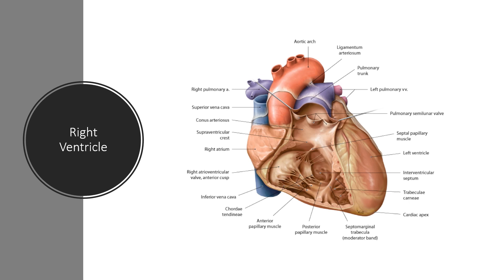The right ventricle receives deoxygenated blood from the right atrium via the tricuspid valve. Blood leaves the ventricle by passing through the pulmonary valve, leading to the right and left pulmonary arteries via the pulmonary trunk. The tricuspid, or right atrioventricular, valve is connected to three papillary muscles via chordae tendineae, which prevent valve inversion when the ventricles contract. The internal surface of the right ventricle consists of trabeculae carneae and a moderator band — a muscular band extending from the interventricular septum to the ventricular wall, which prevents overexpansion of the thin-walled ventricle.